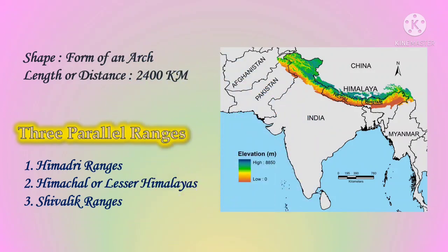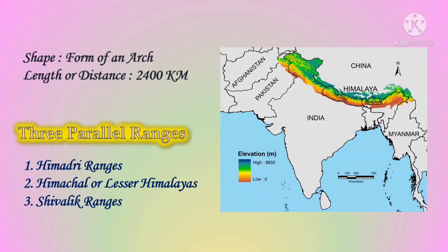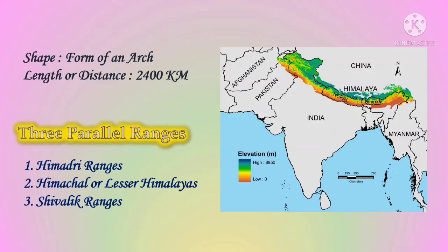Now we look at the important points about the Himalayas. The Himalayas are formed in the shape of an arc. The length of the Himalayas is 2,400 kilometers.